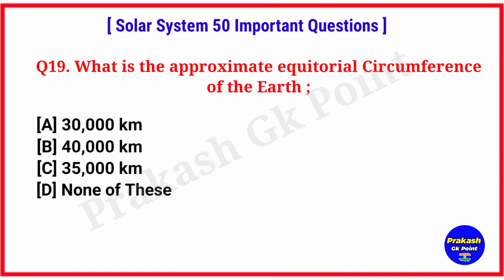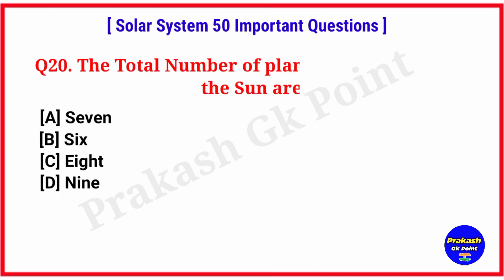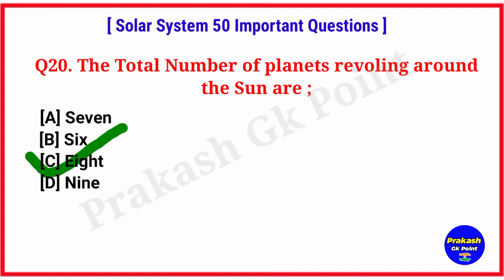What is the approximate equatorial circumference of the Earth? Answer: option B, 40,000 km. The total number of planets revolving around the sun are? Answer: option C, 8 planets.